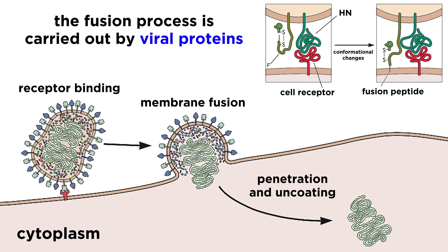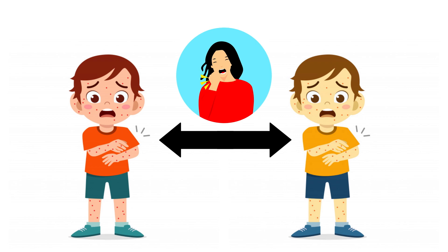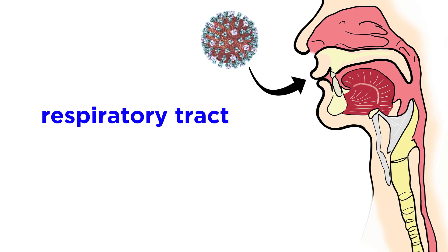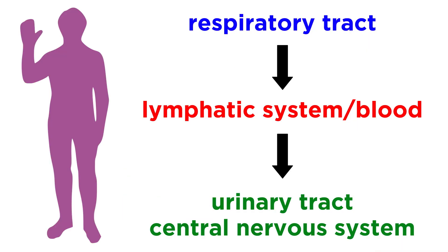The fusion process basically shepherds the virus into the host cell to start replicating in the cytoplasm. As we mentioned, measles is highly contagious. The measles virus is spread from person to person through respiratory droplets, so all it takes is inhaling droplets that an infected person has exhaled, talked, coughed, or sneezed into the air. Once the virus is inhaled, it sets up shop in the respiratory tract, where it replicates for a bit before moving on to spread through the lymphatic system and blood. The virus is thereby widely distributed throughout the body, infecting the respiratory tract, blood vessels, urinary tract, lymphatic system, and the central nervous system.